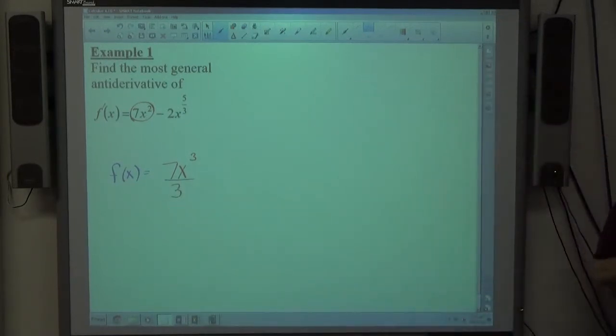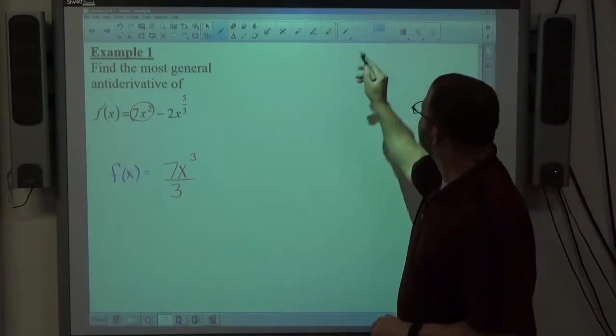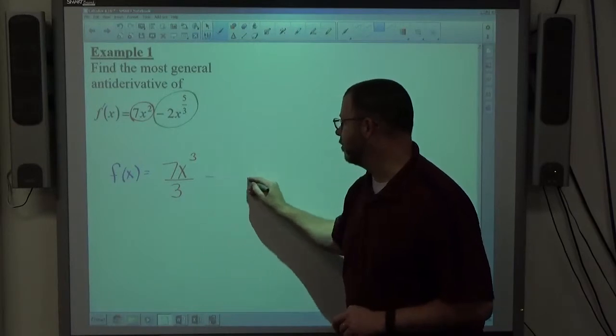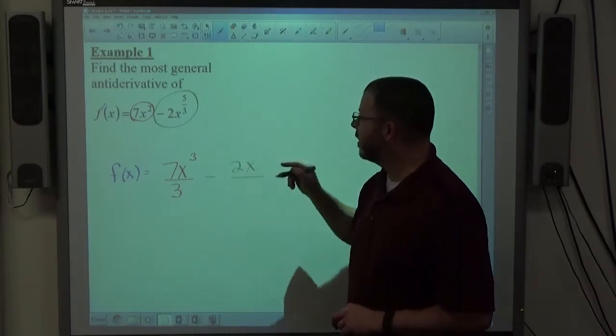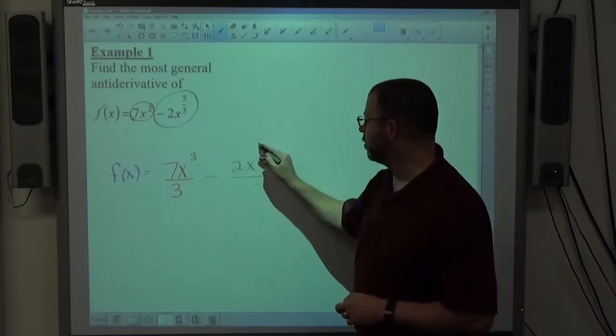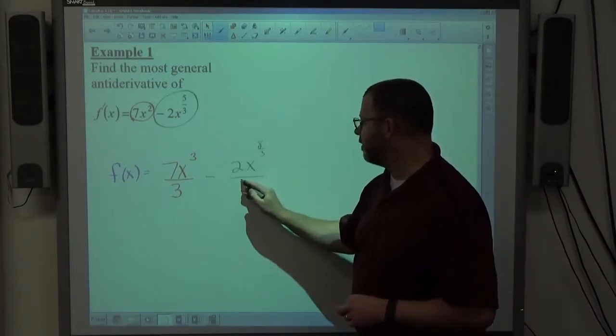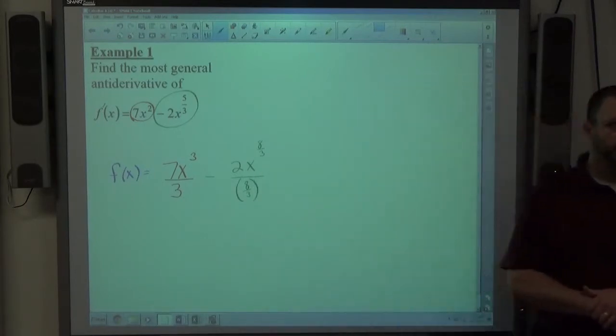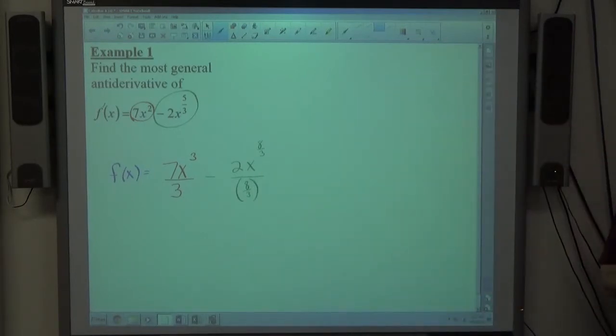So any time you have that polynomial structure, x is raised to powers, you simply raise the power by one and you divide by the new power. The second object is minus 2x to the 5 thirds. It's going to be minus 2x, and again I want to raise the power by one. One plus 5 thirds is equal to 8 thirds, and I'm going to divide that by 8 thirds.